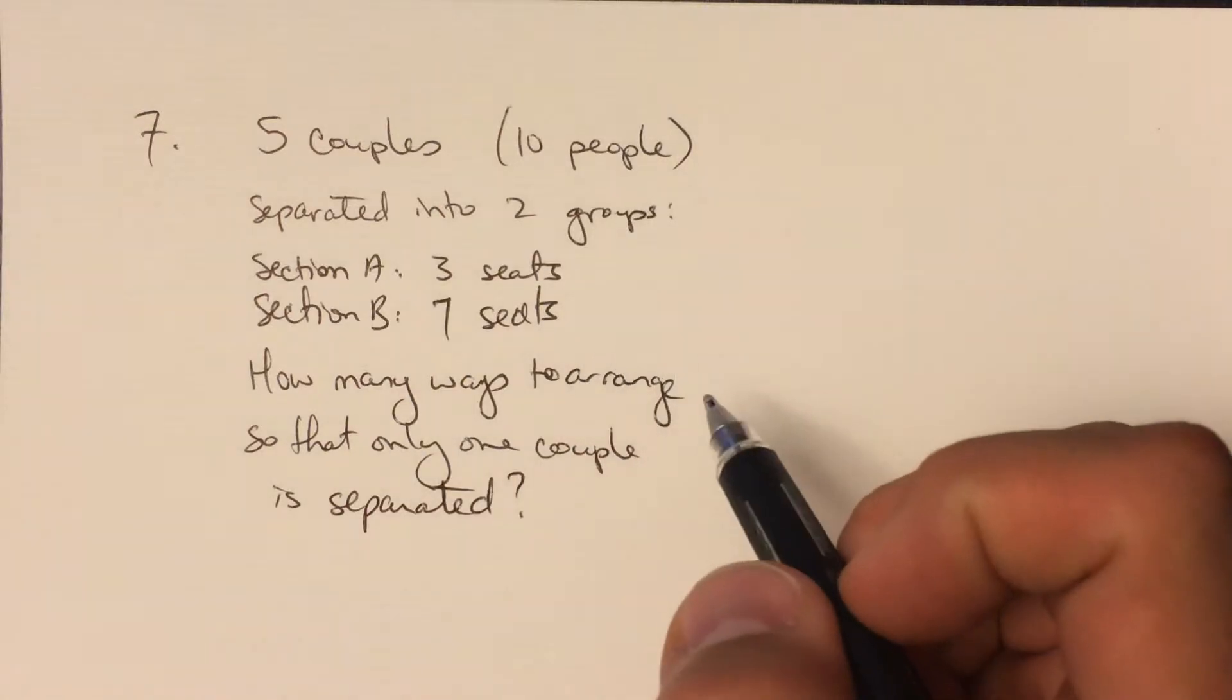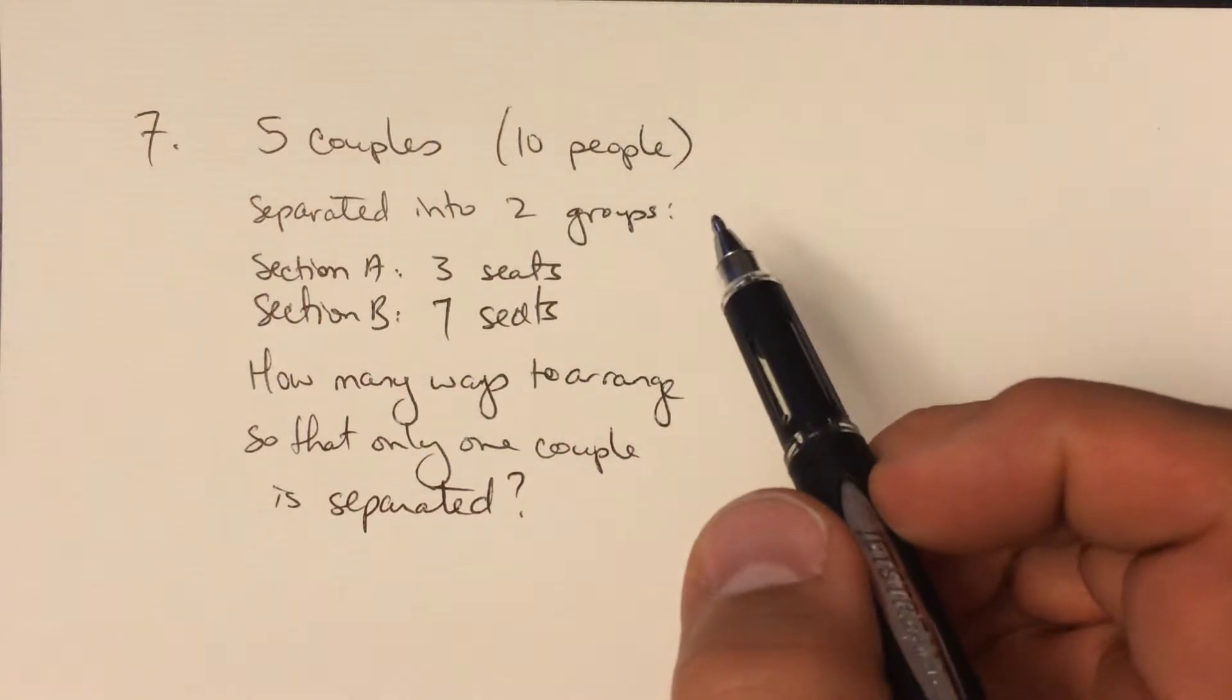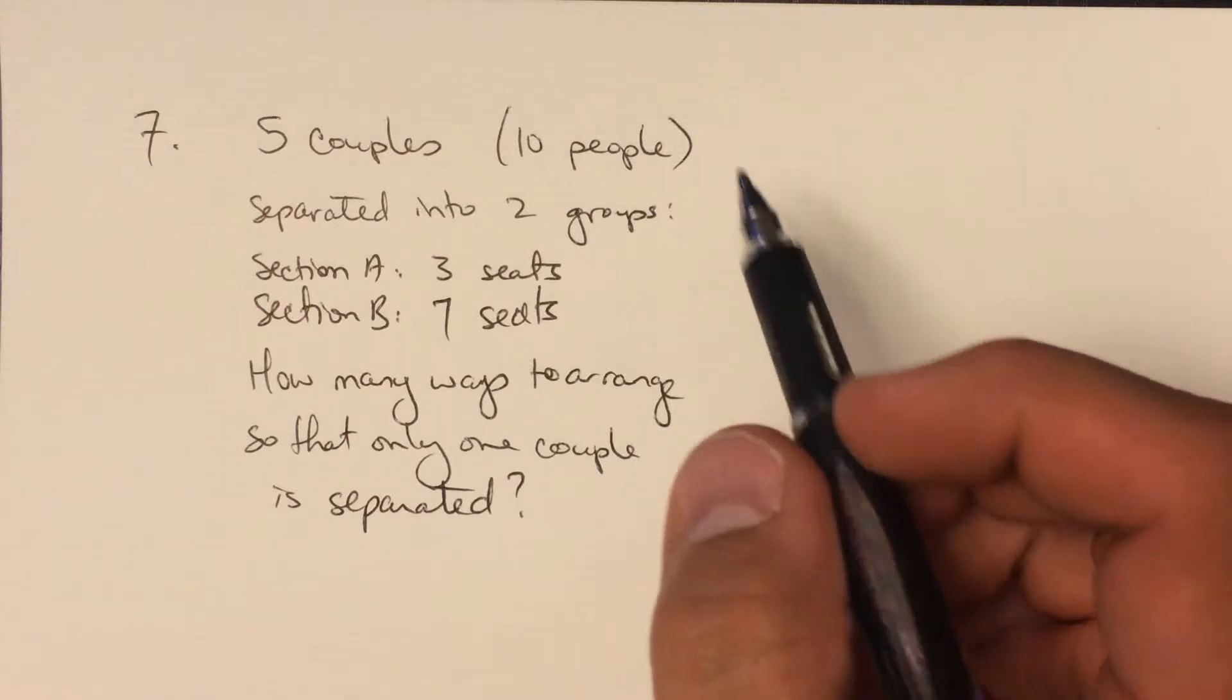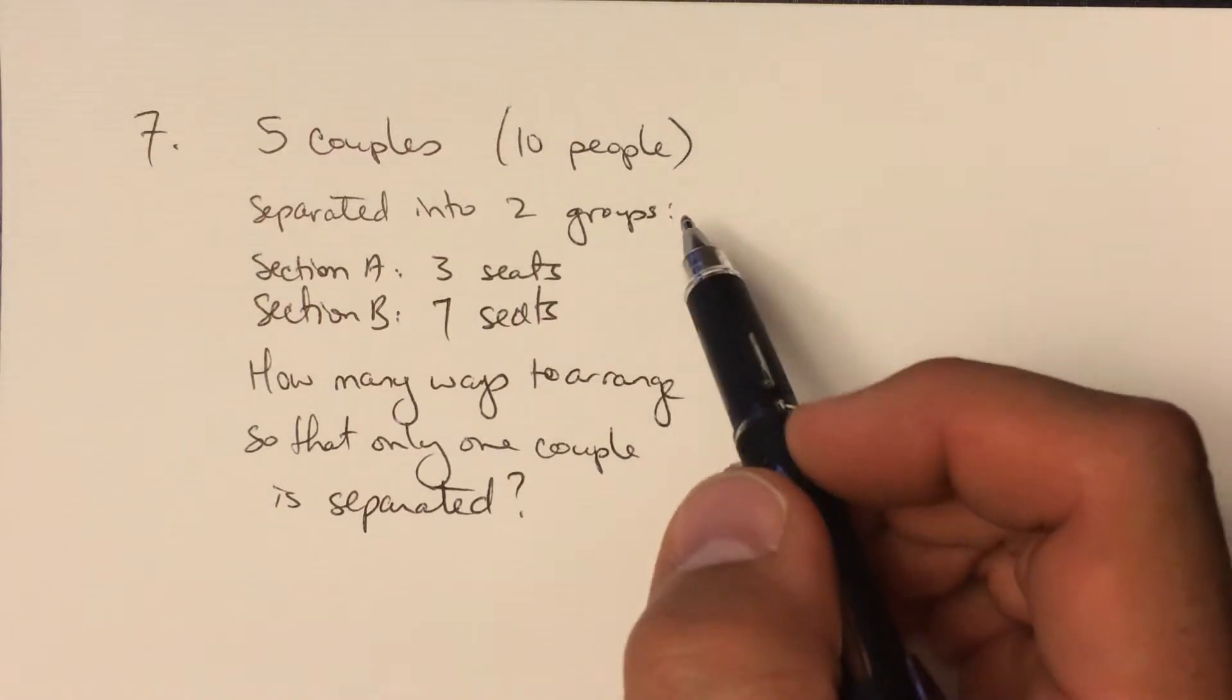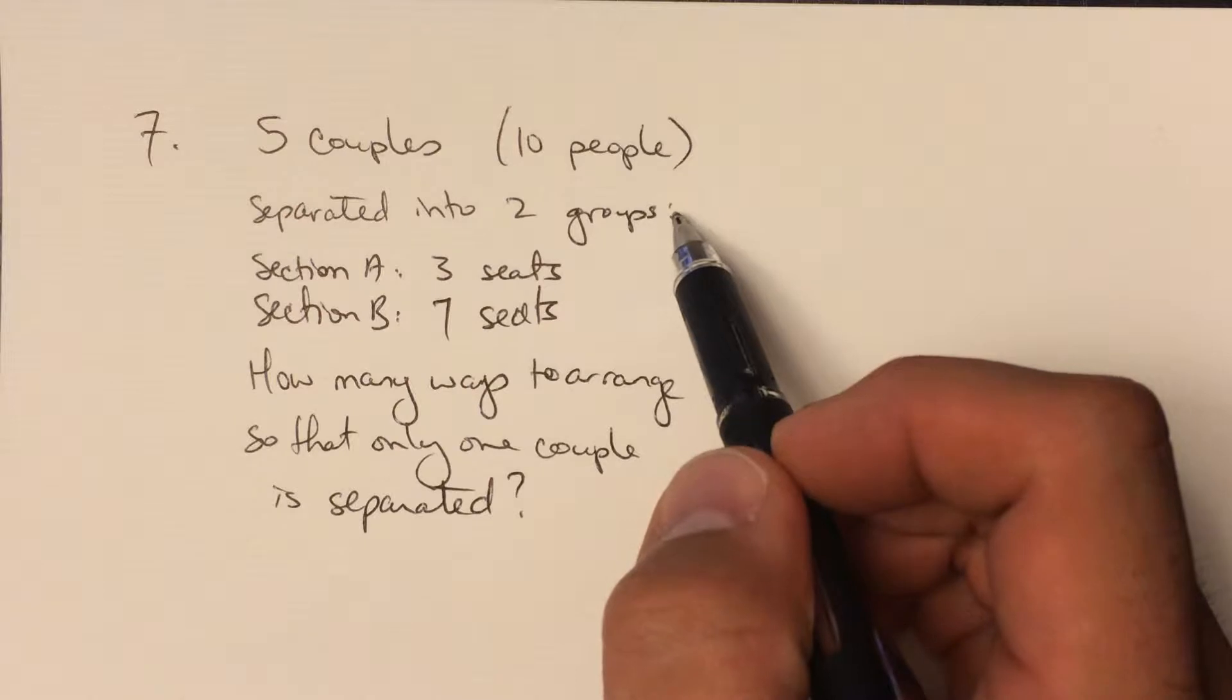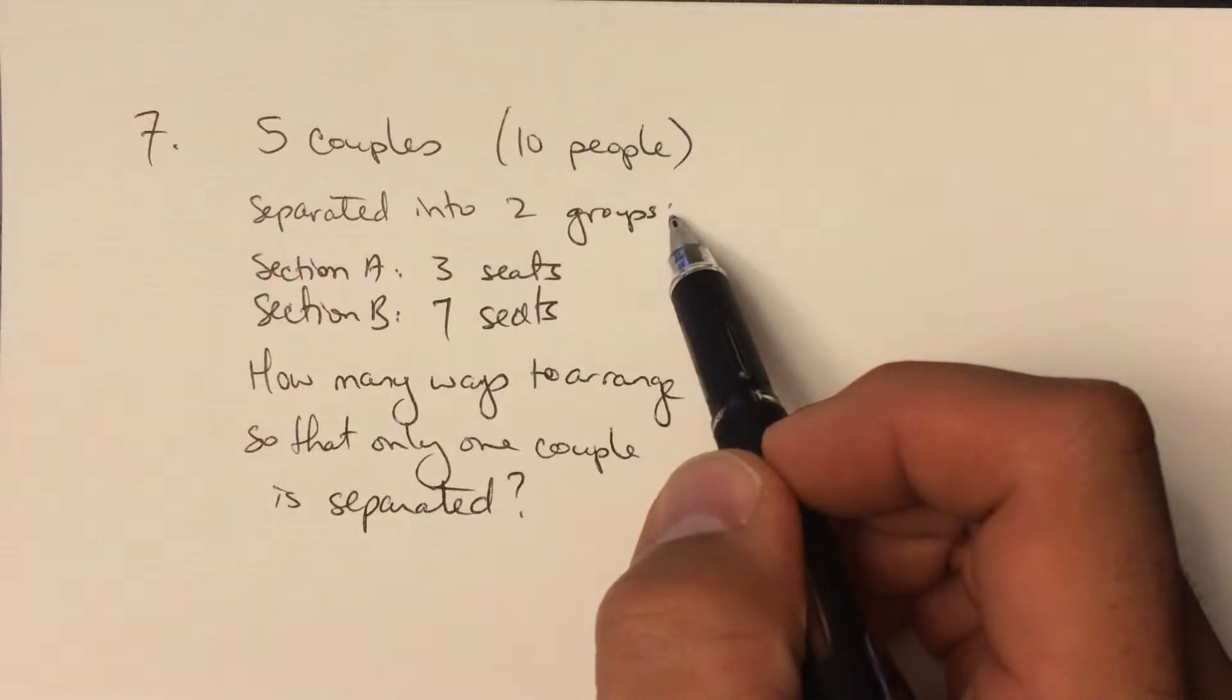Okay, here's everyone's favorite question, number seven, with the five couples going to a concert. That's ten people. When they get their tickets, though, they find out that they are not able to all sit in a single row.